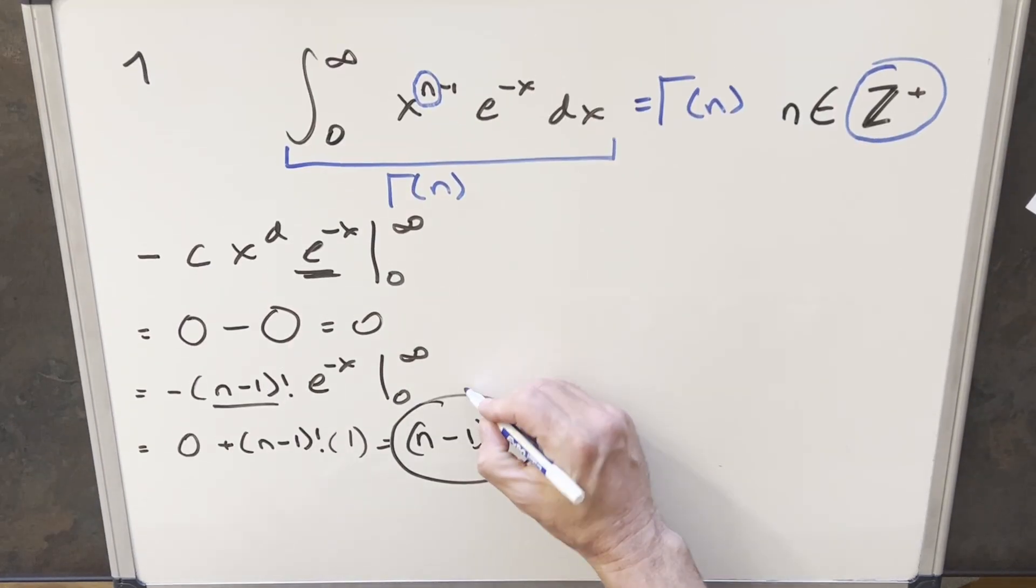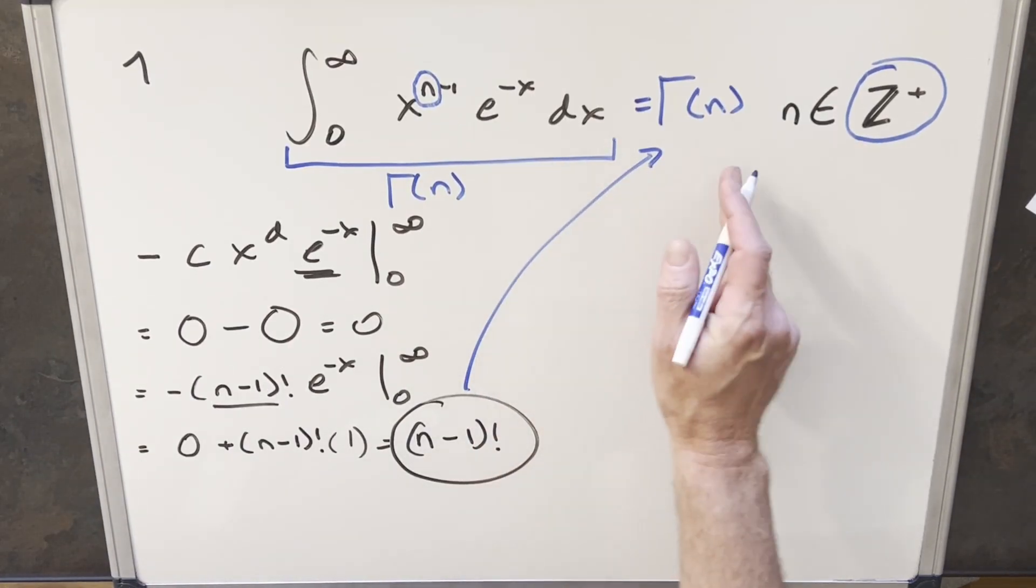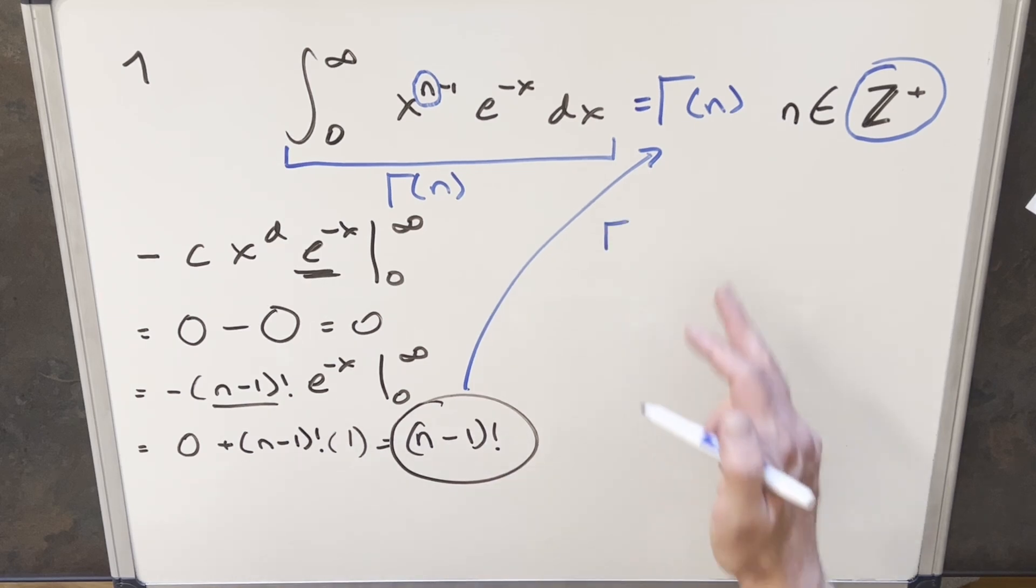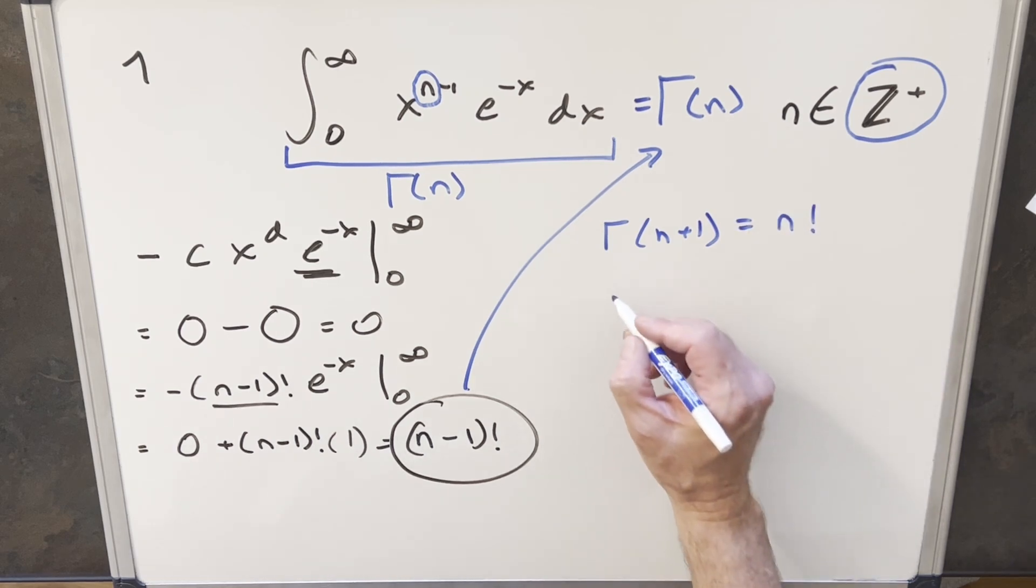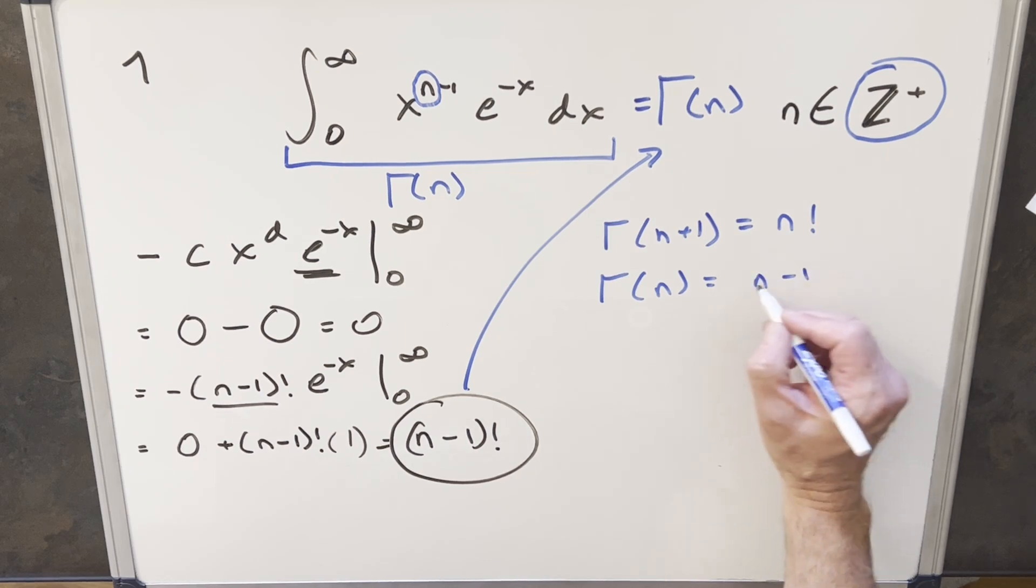And now just going back to what we found at the beginning, that this integral is the same thing as gamma of n. Well, we do have a way to equate the gamma function to factorials. We have this formula, like I usually write it like this, gamma of n plus 1 equals n factorial. But this is the same thing as saying that gamma of n equals n minus 1 factorial. And so gamma of n is the same thing as n minus 1 factorial.